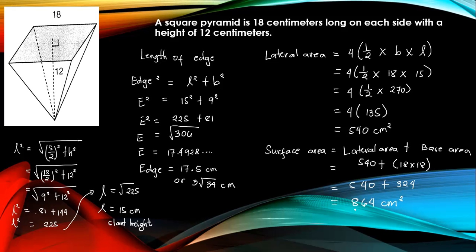So we now have the surface area of 864 centimeters squared, lateral area of 540 centimeters squared, the length of the edge is 17.5 centimeters or 3 square root of 34 centimeters, and the slant height is 15 centimeters. Thank you for watching. God bless!